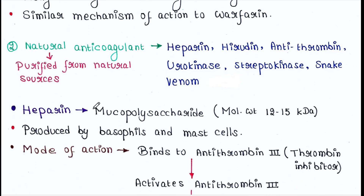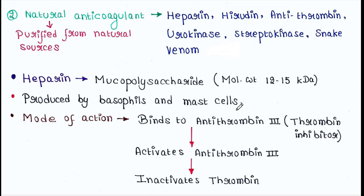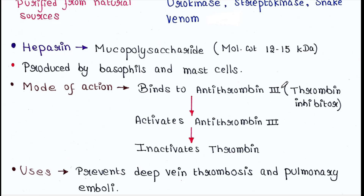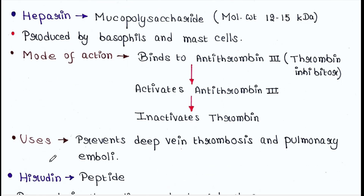Heparin is a mucopolysaccharide with a molecular weight of 12 to 15 kilodaltons. It is produced by basophils and mast cells. Mode of action: it binds to antithrombin 3, which is a thrombin inhibitor. Once it binds to antithrombin 3, antithrombin 3 gets activated and thrombin is inactivated. Uses: it prevents deep vein thrombosis and pulmonary emboli.